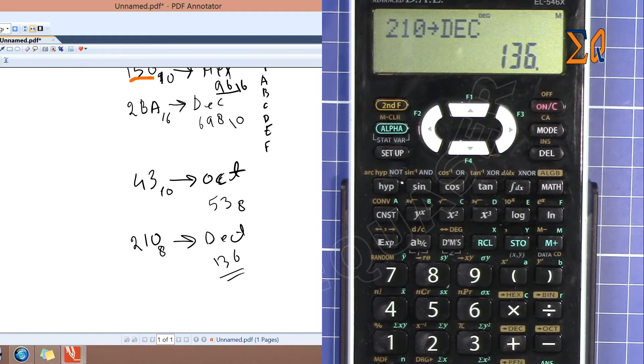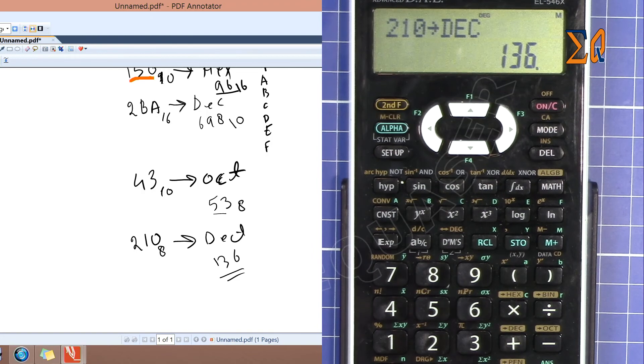As you can see, 210 will be represented - it's actually 136 in decimal. So the number will increase if you convert it. Like 43 is represented as 53, so it's larger. Thank you for watching.